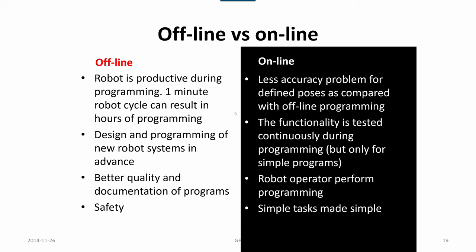For online, we have less accuracy problems for defined poses compared with offline programming. In principle, what you see is what you get. We have the real system, we do programming on the real system, and we drive the robot to whatever pose and target we are aiming at. So if it works, it works. The functionality is tested continuously during programming, but only for simple programs. For more complex programs, it might be a huge complication to apply online programming, especially if we have more than one robot in the same work environment.